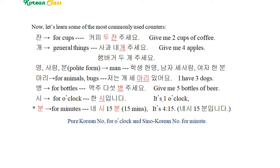마리 is the counter for animals and bugs. 저는 개 세 마리 있어요. (I have three dogs.) 병 is the counter for bottles: 맥주 다섯 병 주세요. (Please give me five bottles of beer.)